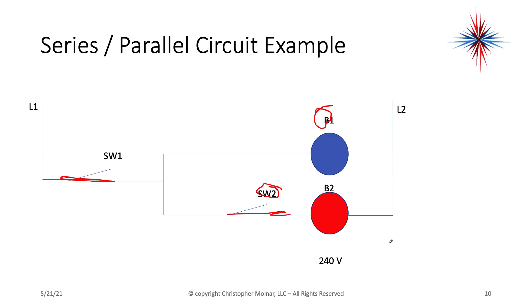Switch one is in series with bulb one and with switch two and B2. The two branches, B1 and B2, are in parallel with each other. They're going to get full source voltage. The total circuit amperage is whatever the amperage of B1 and B2 are combined.